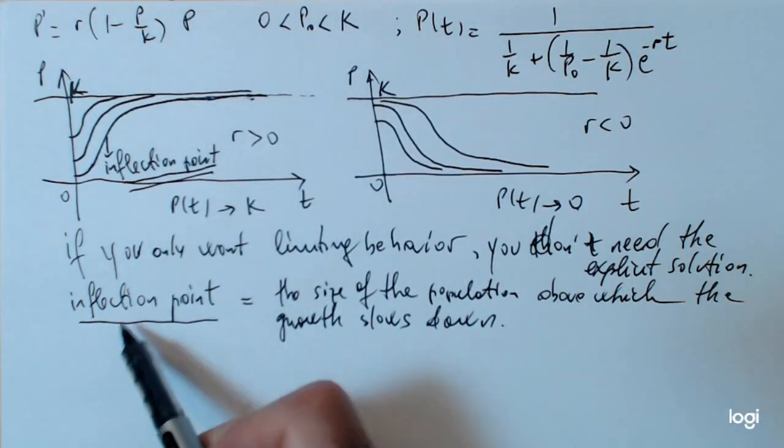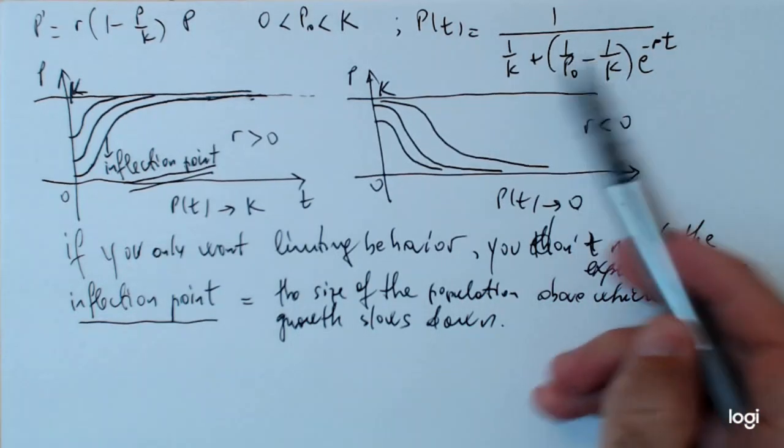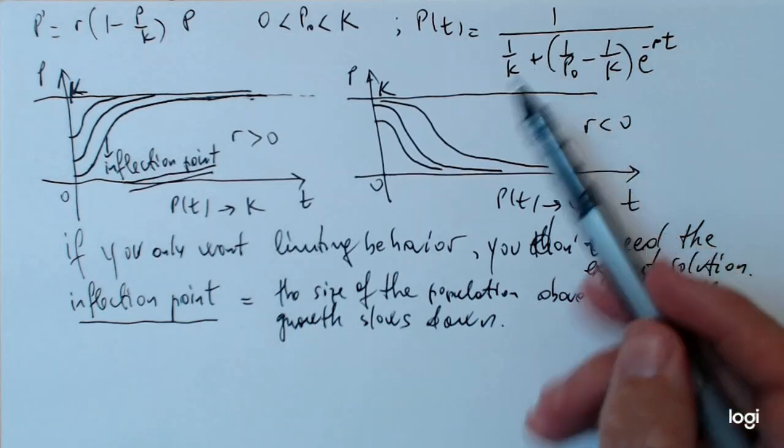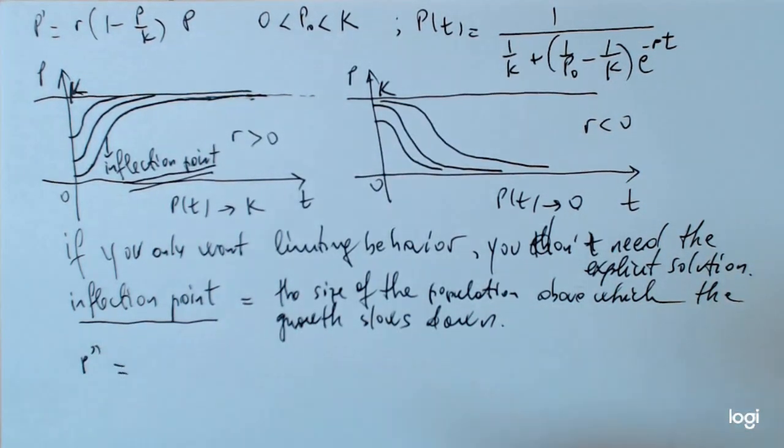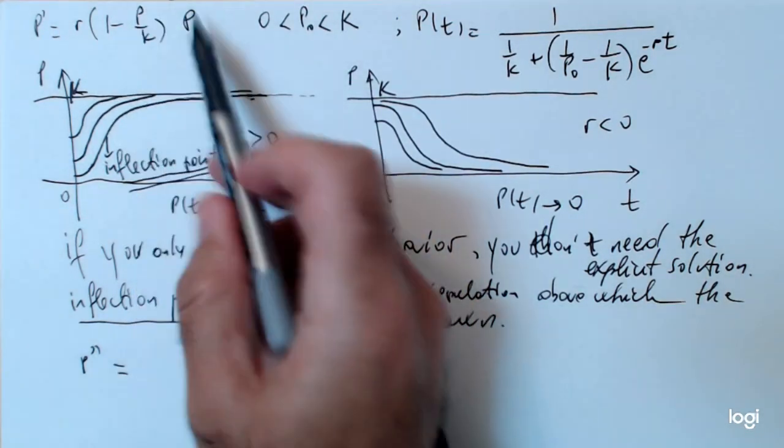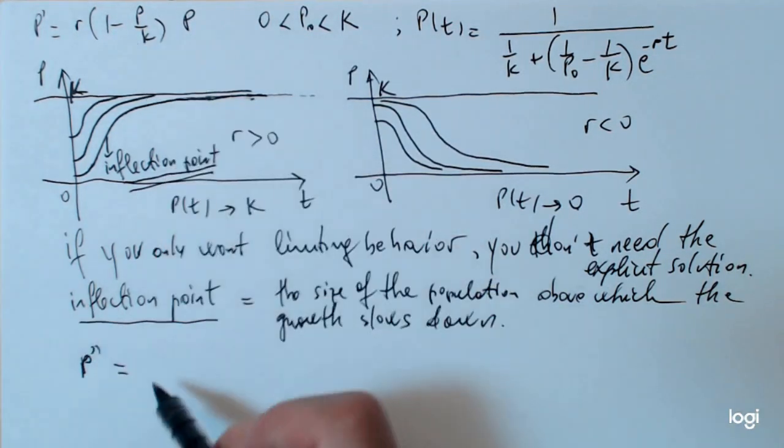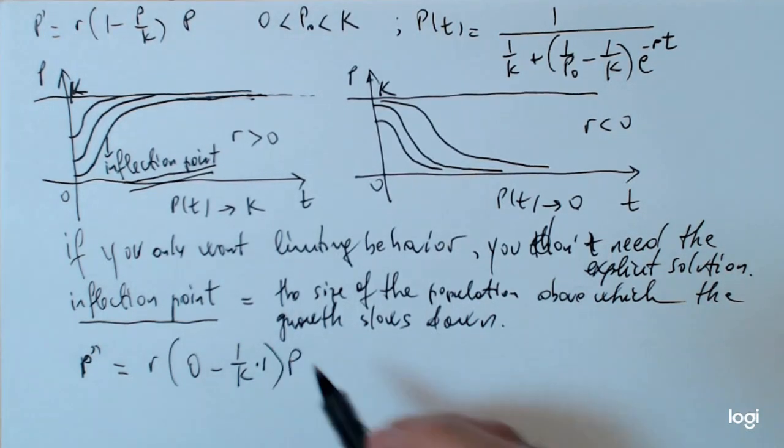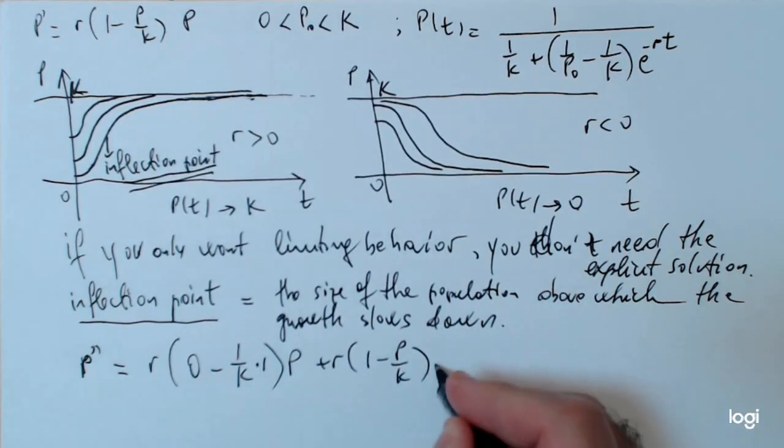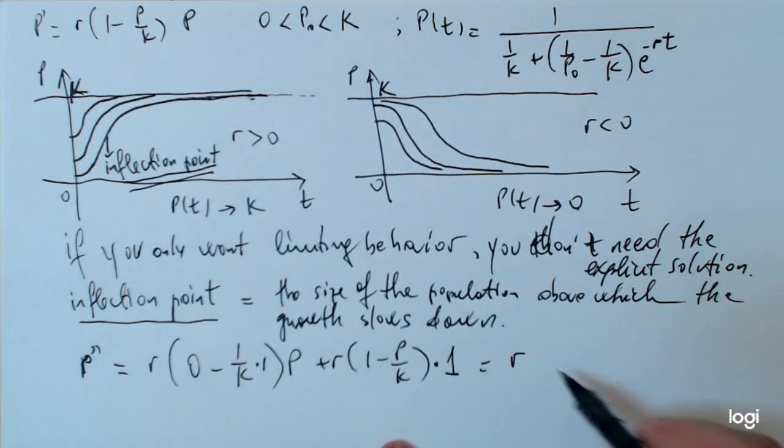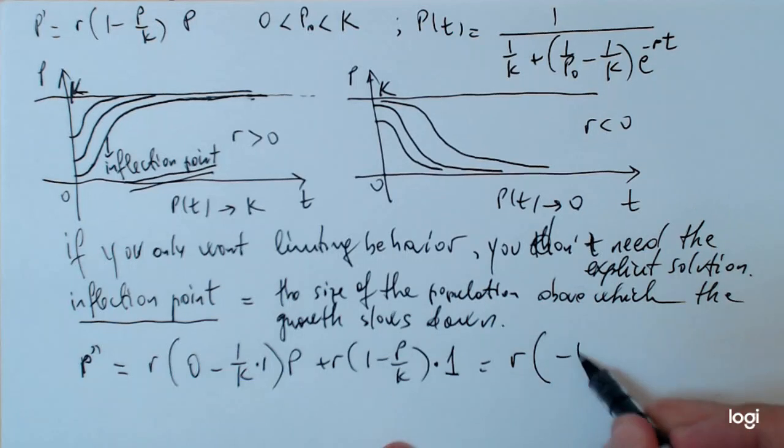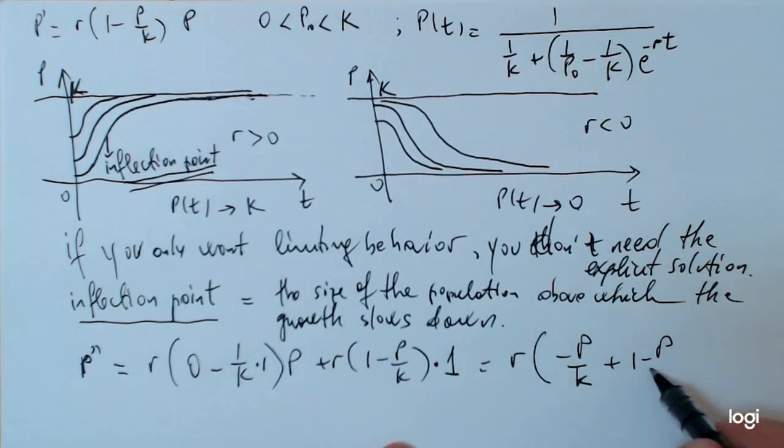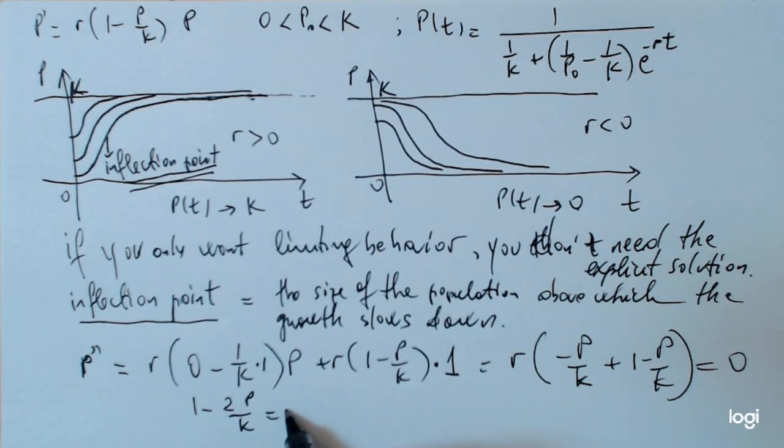So, one of the nice things about models like this is that this inflection point can actually be computed without solving for the explicit equation, for the explicit solution. We can go back to the ODE itself and take another derivative on both sides. Remember, with the exception of r and k, everything is a function of p. So, we do the product rule, so we have r, one prime is zero, minus one over k times one, p plus r times one minus p over k times one. And so, if I solve for the parentheses here, one minus two p over k equals zero, then p equals k over two.